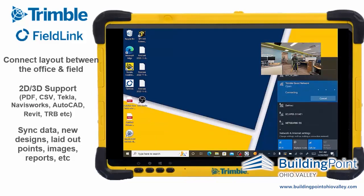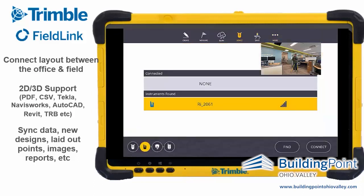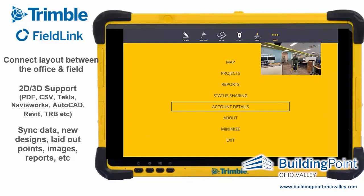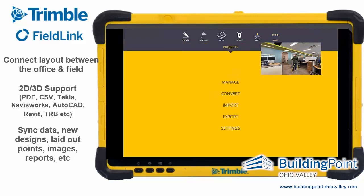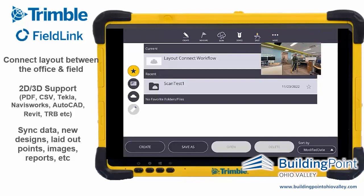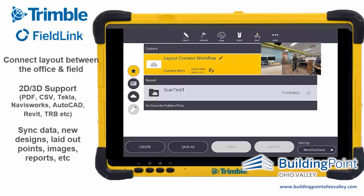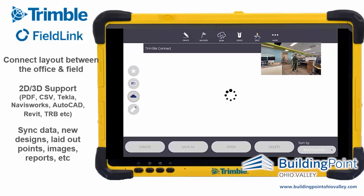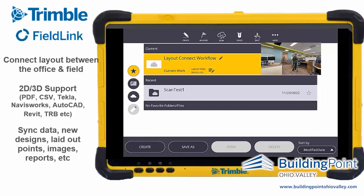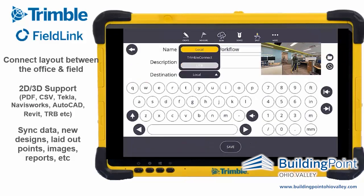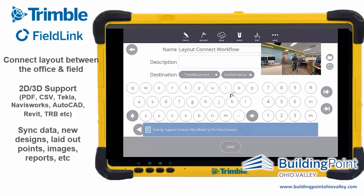We need to make sure we're connected to an internet connection, and since the RI connects through Wi-Fi, we need to disconnect from it first. Now that I'm connected to the internet, I'll go to account details to log into Trimble Connect. Then go into Projects, Manage, hit the cloud icon, find the Layout Connect Workflow project, hit Save As, and sync up into Trimble Connect.